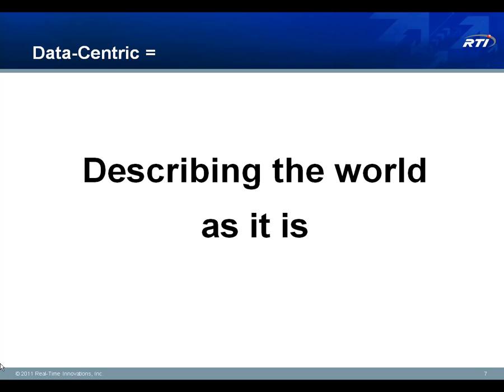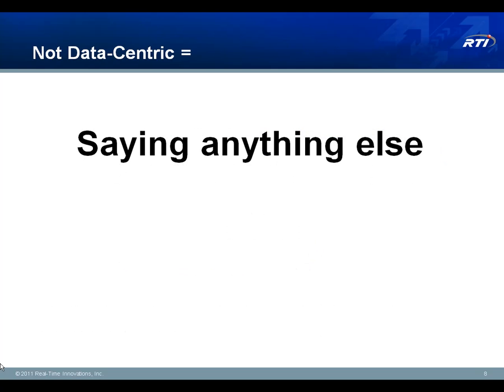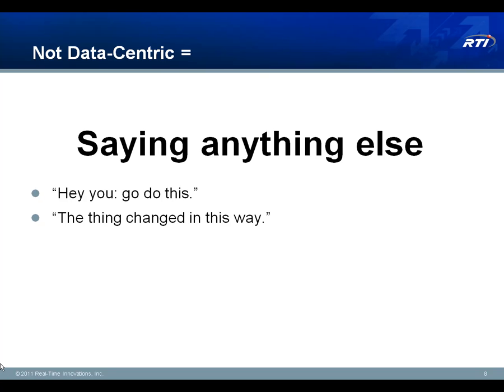So what's the quick definition of data-centricity? A data-centric architecture is one that focuses on describing the world as it is — it gives you stateful snapshots at particular points in time. One important implication is that when you make the state explicit, it's now visible to be acted upon by automation. Your communications infrastructure can maintain, distribute, and reason about that state. A system that's not data-centric is often focused on sending commands point-to-point, telling one actor to do one thing on behalf of another, or describing changes that have occurred over time, but without making those state changes explicit.